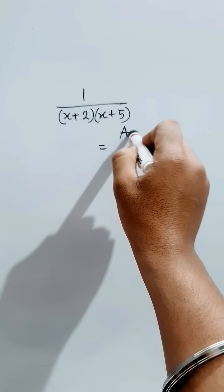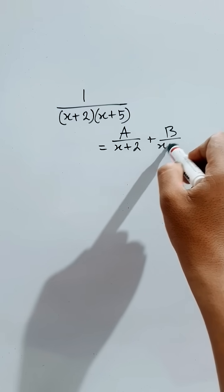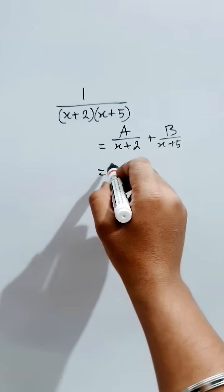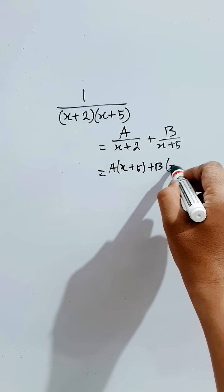That is A divided by one of them plus B divided by the other. Now take LCM, then you will get A into (x + 5) plus B into (x + 2). The bottom part will be (x + 2) into (x + 5).